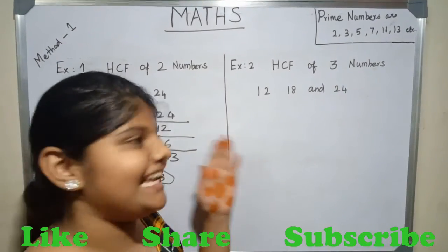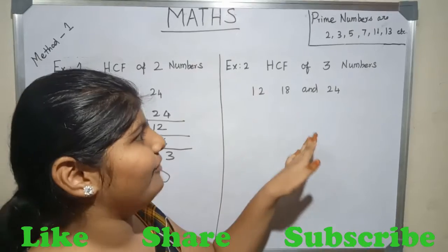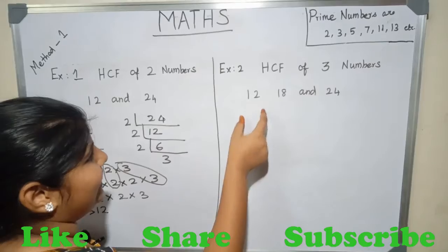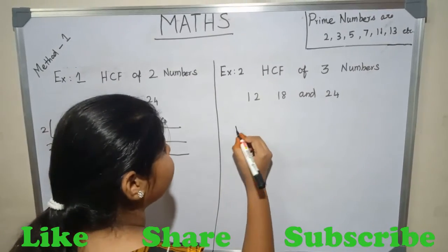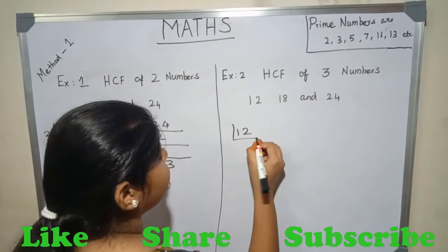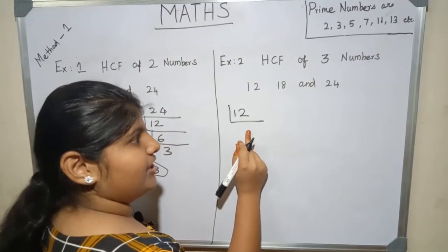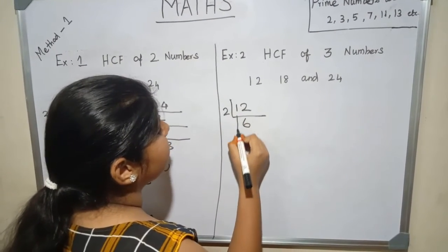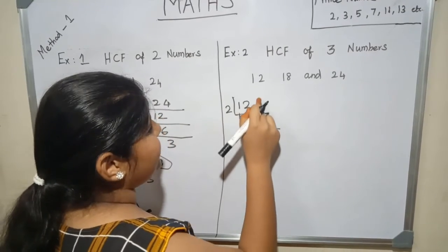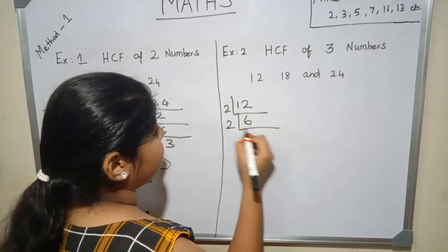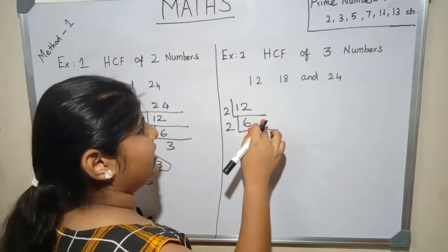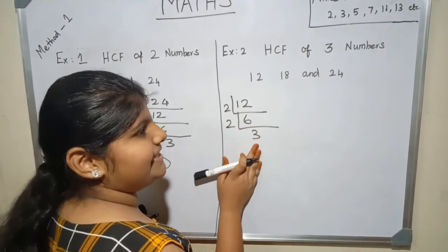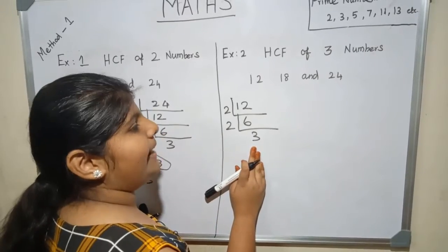Now let us see the second example — HCF of 3 numbers: 12, 18, and 24. We take 12 and write it here. 12 is an even number, so it is divisible by 2. 2 threes are 6. We stop here because 3 is a prime number.